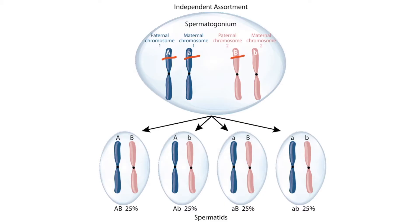It's important to understand the difference between a gene and an allele. Because each of the alleles are on different chromosomes, they separate independently of one another. Notice that during meiosis the chromosomes are separated, resulting in four different possibilities: Big A Big B, Big A little b, little a Big B, and little a little b. In other words, there's an equal probability of inheriting any of the alleles because they're randomly separated during meiosis. This idea is referred to as independent assortment.